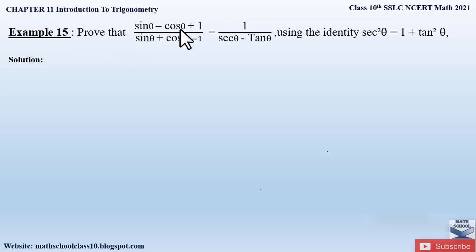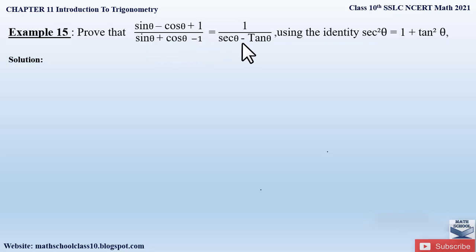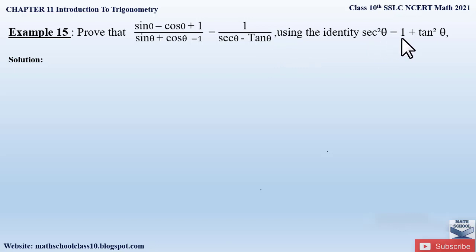Example 15 from Chapter 11 says: prove that (sin θ − cos θ + 1) divided by (sin θ + cos θ − 1) is equal to 1 divided by (sec θ − tan θ), and this we have to prove using the identity sec²θ = 1 + tan²θ. This question is very important and a bit tough.